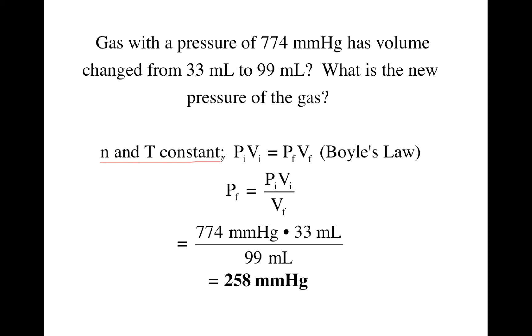So this time you notice the moles and the temperature were not mentioned, so you assume those are constant. So the bottom of the denominator in the general gas law drops out because those variables cancel on both sides of the equation. So we get a simplified version just relating pressure and volume, which is known as Boyle's Law. If we solve that for Pf, that's going to equal Pi Vi over Vf.